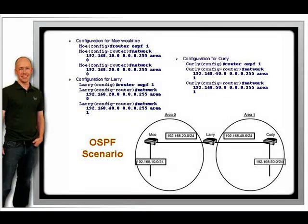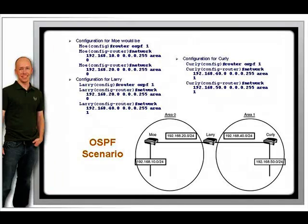The next step is to activate OSPF on your interfaces and advertise your networks. This is done with a network command as before, but the syntax is a little different. The syntax is: network, network address, wildcard mask, area, area ID.